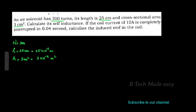For the first question, calculate self-inductance. Self-inductance L is equal to N squared divided by S, where S is the reluctance. The reluctance equation is S equals l divided by mu0 times mu r times A. Substituting, L equals N squared times mu0 times mu r times A divided by l.